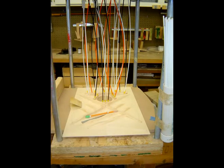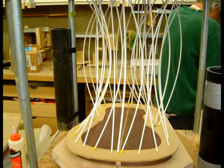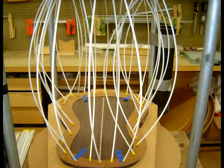A go bar deck is an ancient clamping method that is widely used in lutherie today. A go bar is a flexible rod used in the centuries old technique of clamping.